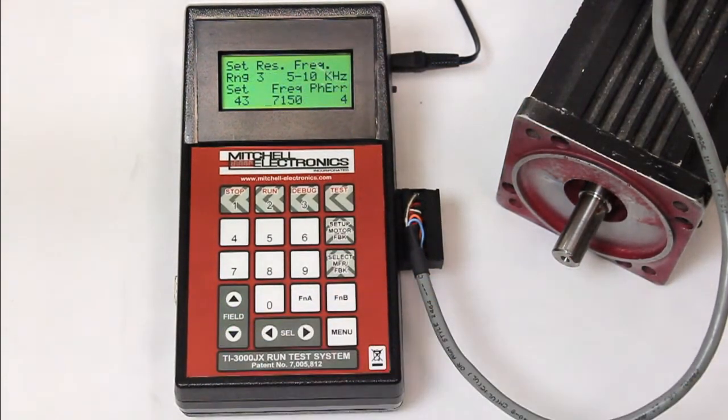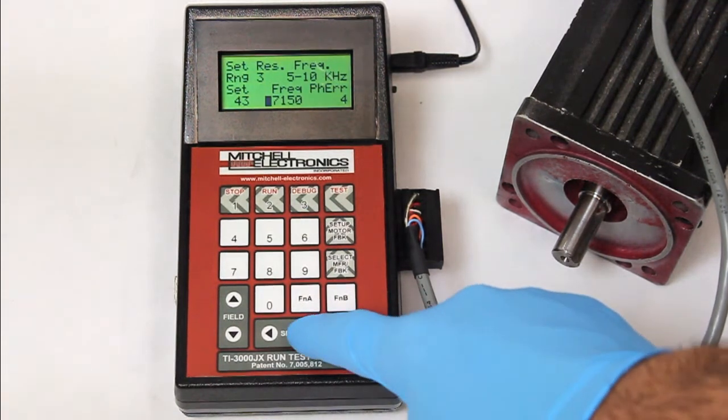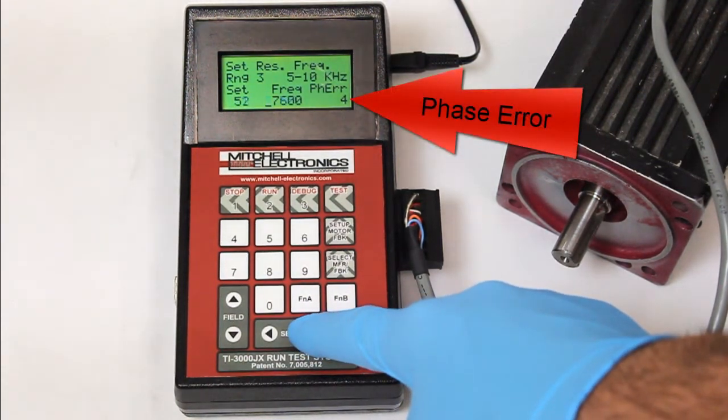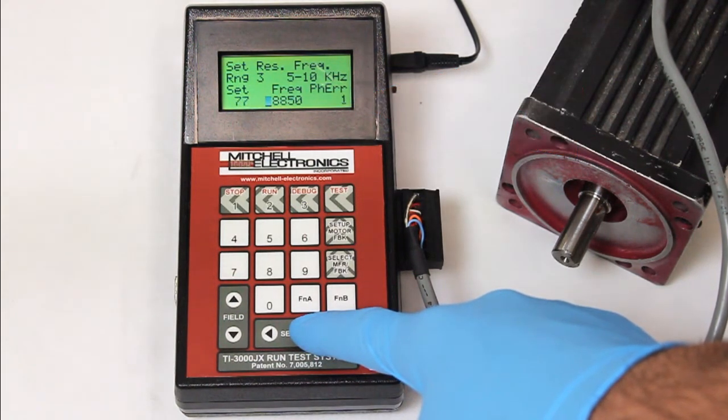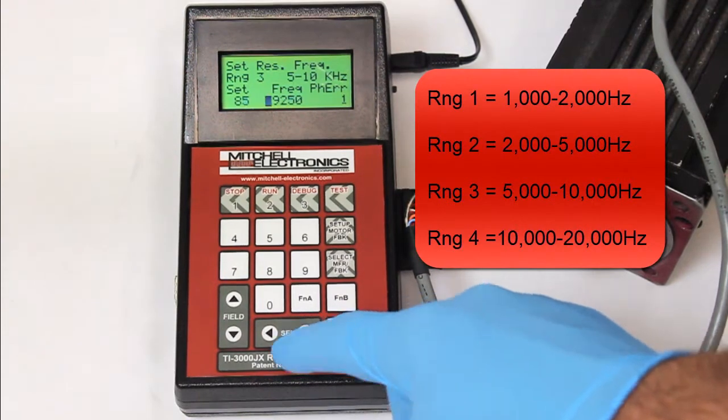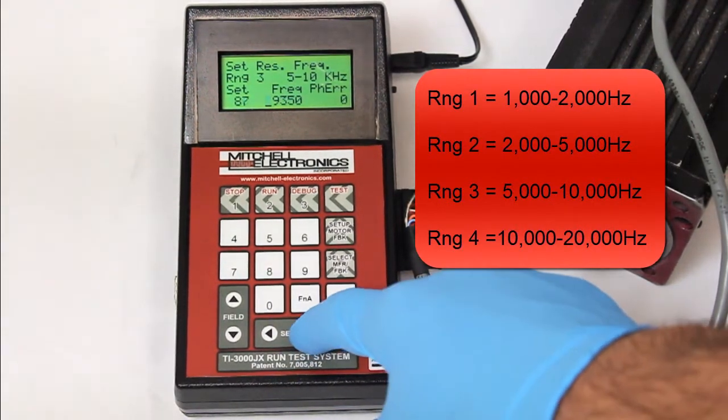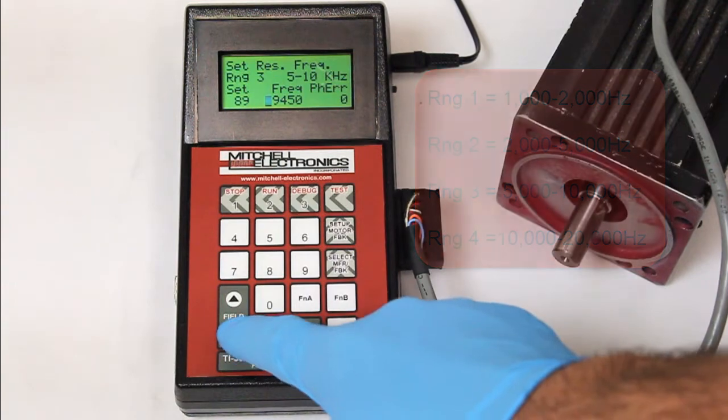Press the down arrow again to access the frequency selection. Try to get the phase error close to zero by adjusting the frequency up and down. You can change the frequency ranges by pressing numbers one through four on the keypad and fine-tune the frequency by using the left and right arrow keys.